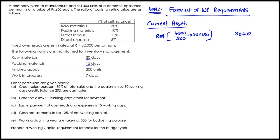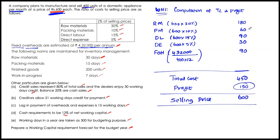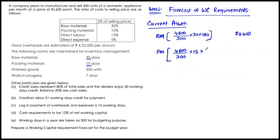Packing material is held for 15 days. For 4,800 units over 300 days, multiplying by 15 days and the packing material cost of Rs. 60 per unit gives: 4,800 ÷ 300 × 15 × 60 = Rs. 14,400. So this is the investment required in packing material.